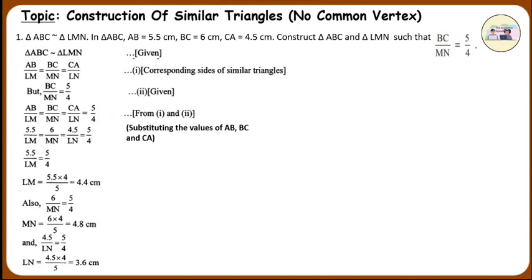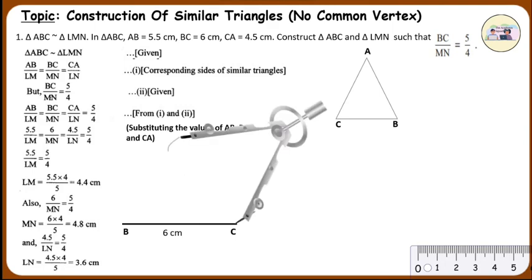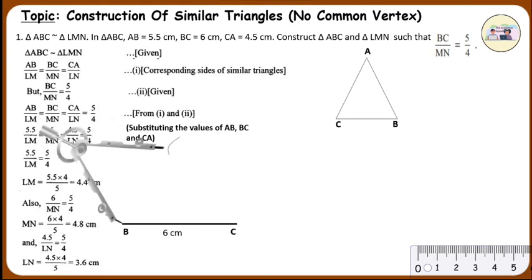Steps of construction. First, construction of triangle ABC. Draw a rough figure of triangle ABC. Draw a line segment BC of length 6 cm. On the compass, take measurement 5.5 cm and construct an arc. Similarly, take a measurement of 4.5 cm and construct an arc. Name the intersection point as A.